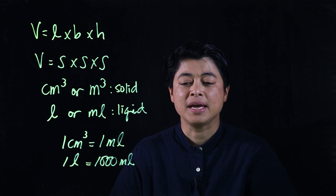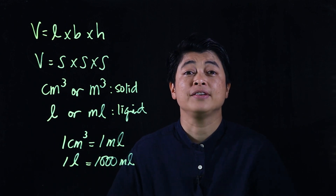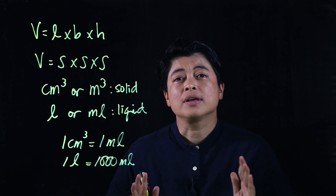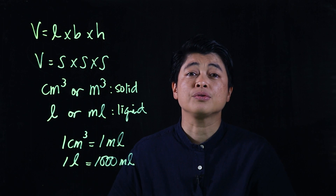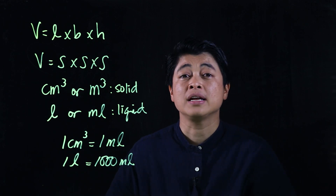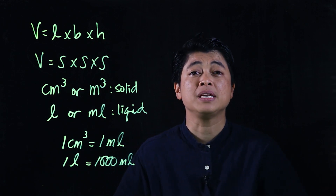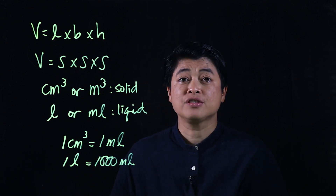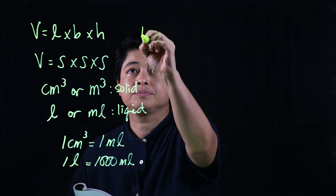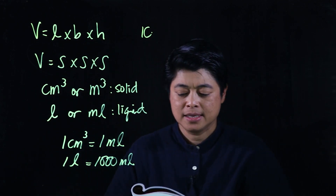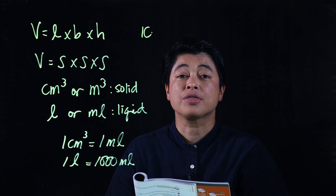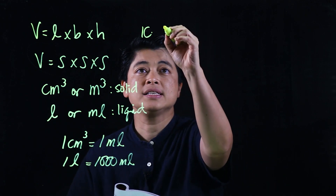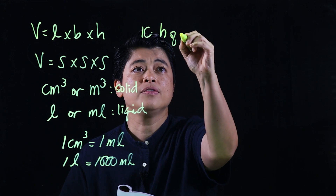Our problems will come from pages 49 and 50. As a reminder, for these problems we want to write down the givens and write down the formulas we will be using. Problem 1c on page 49 says a cubical tank is two-thirds filled with water.